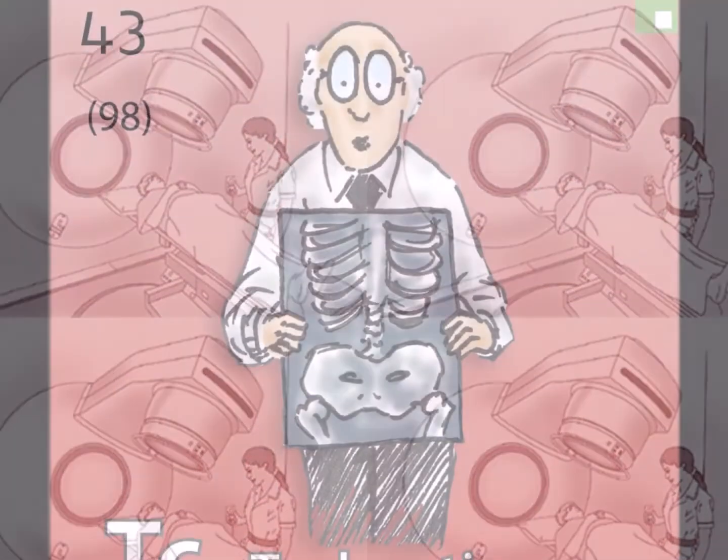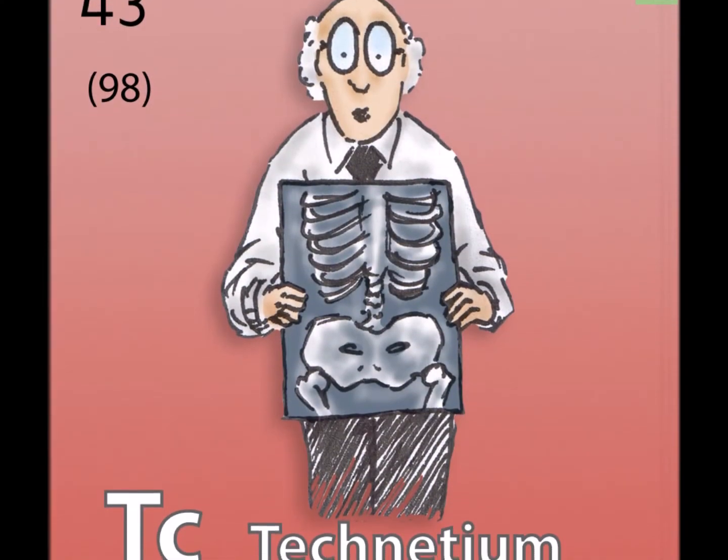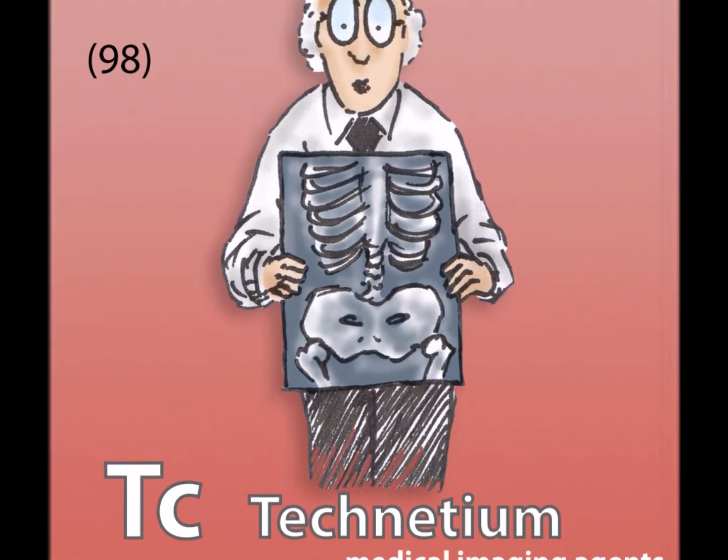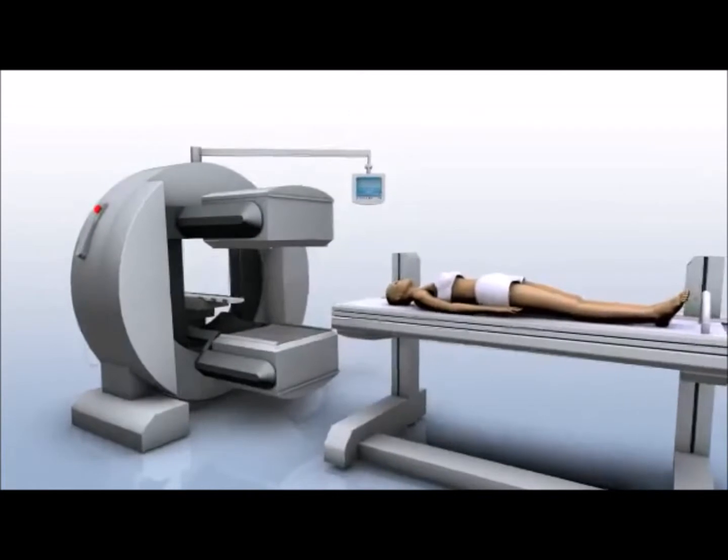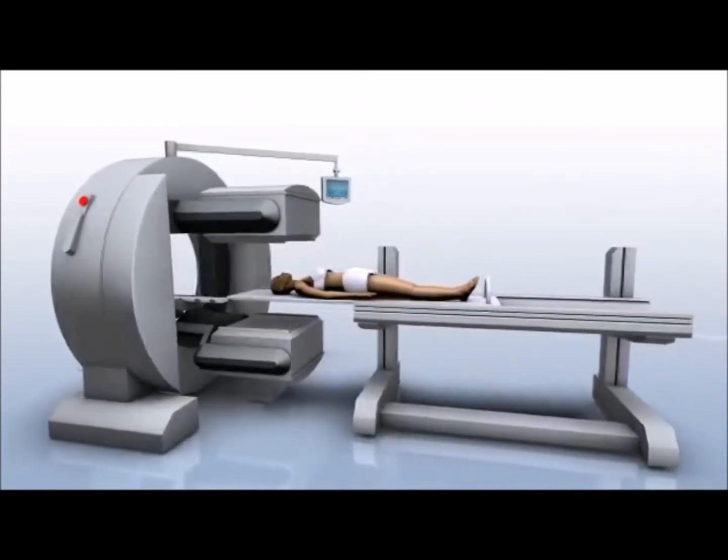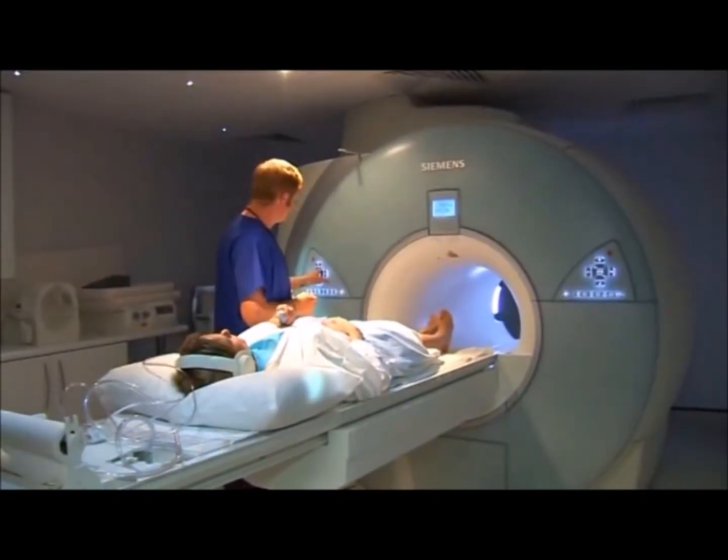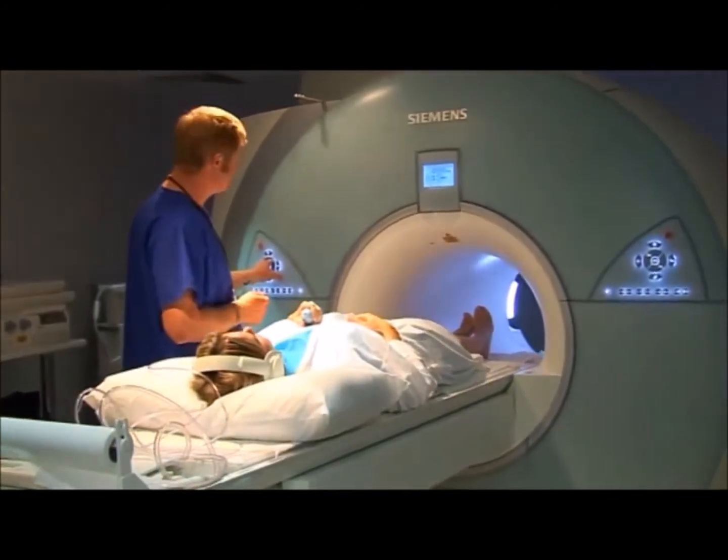Technetium-99m also has various characteristics that make it safer compared to other isotopes, such as its slow gamma ray radiation. This means it can be easily identified by gamma ray cameras while sending out clear signals for a short time, making medical use quick and efficient.